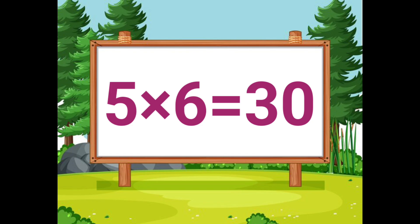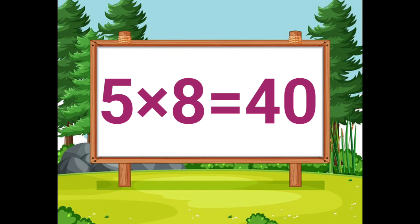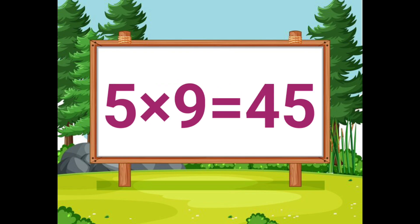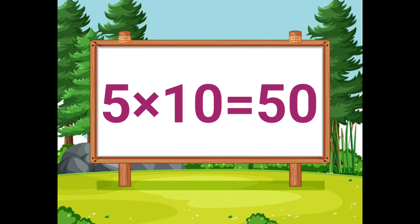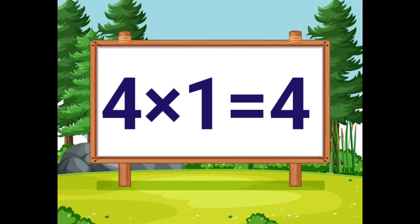Five sevens are thirty-five. Five eights are forty. Five nines are forty-five. Five tens are fifty. Let's revise the 4 table and 5 table one more time.